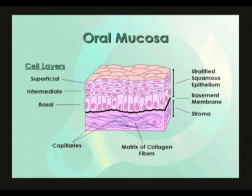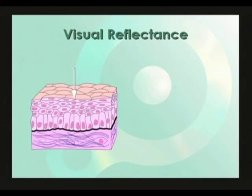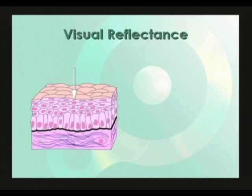A surface layer of keratin of various thickness can also be present, though it is not shown in this picture. Certain types of oral mucosa are naturally keratinized, while others can become keratinized as a result of chronic irritation or other disease processes. The mechanism of visual reflectance — what happens when we see things under white light with our naked eye — is shown here. The type of reflection that mainly contributes to how we perceive an object is diffuse reflectance, where photons of light actually enter an object, get scattered or bounced around inside, and then come back out to our eye — if they don't get absorbed first.